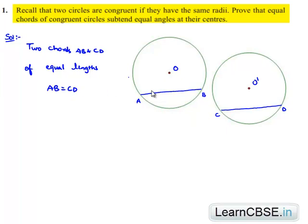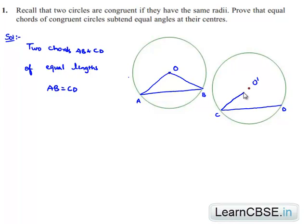Now we need to prove that the angles subtended by them at the centers must be equal — that is, angle AOB is equal to angle CO'D. This is what we need to prove.